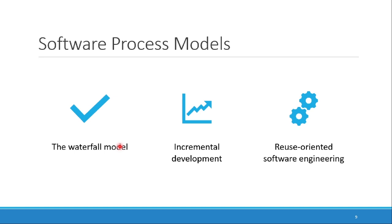The next model is reuse-oriented software engineering — you assemble software from existing components. For example, in a library management system, you pick a module that has already been assembled, possibly duplicating it with minor changes. This can also be plan-driven or agile. In practice, most large systems are developed using a process that incorporates elements from all these models.